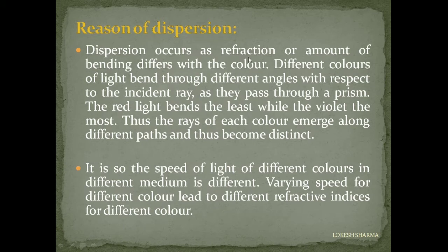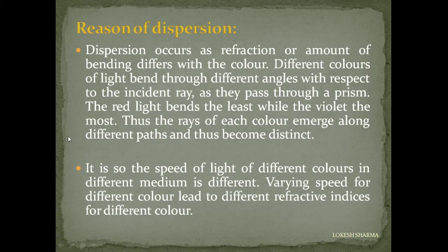Why does dispersion occur? Dispersion occurs because the amount of bending differs with color. The different colors of light bend through different angles with respect to the incident ray as they pass through a prism — red light bends the least while violet bends the most. Thus the rays of each color emerge along different paths and become distinct. This happens because the speed of light of different colors in a medium is different, and varying speed leads to different refractive indices, since refractive index is inversely proportional to the speed of light in that medium.